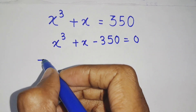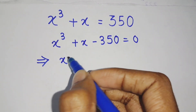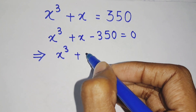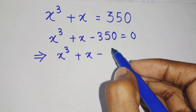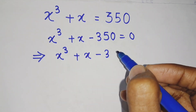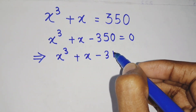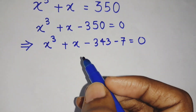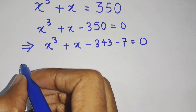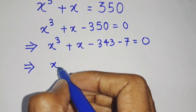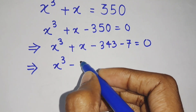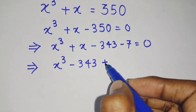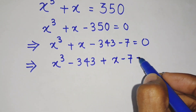Now, we can take 350 and divide it into two parts. So x cubed plus x minus — what we can do is take a cube: 350 can be written as 343 plus 7. We can take 343 to this side. 343 we can write as the cube of 7 — that is the trick. So we get x cubed minus 343 plus x minus 7 equals to 0.